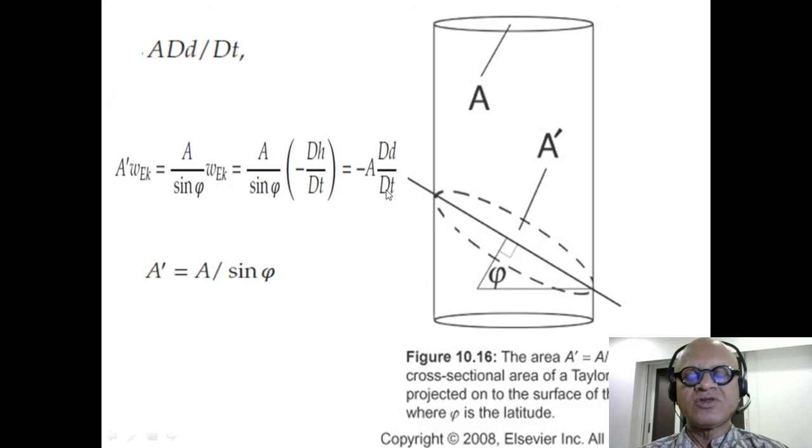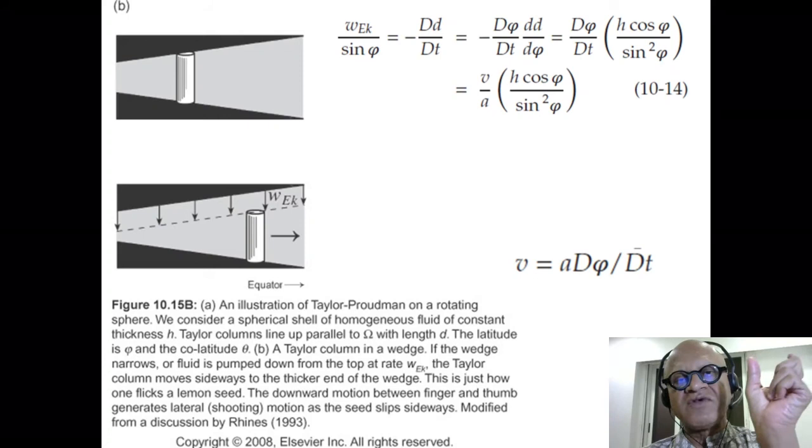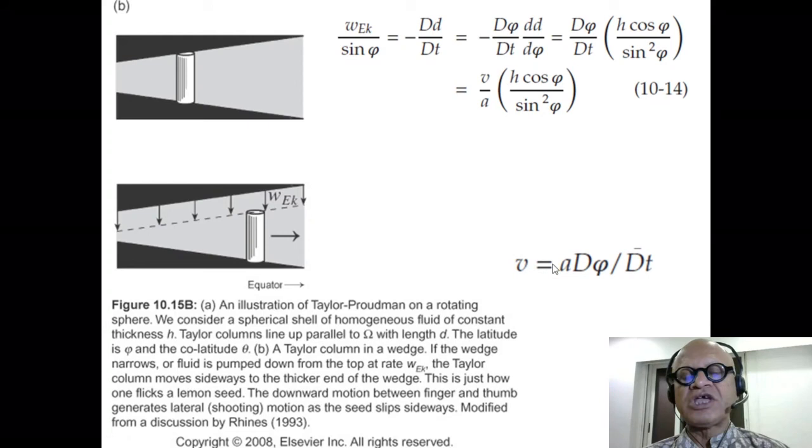Okay, so we got our Taylor column expression. So W_Ekman over sin φ is -dD/dt, whereas we can change this into dφ/dt times dD/dφ. D is just a function of latitude. What is dφ/dt? That is just V divided by A. Why? Because V, the meridional velocity, is change in latitude with time times the radius of the Earth. So V is A·dφ/dt—very simple manipulation. Make sure you understand it.